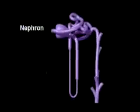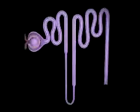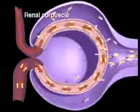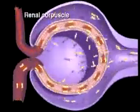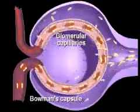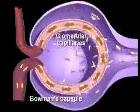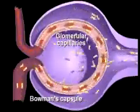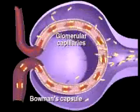In its first section, the renal corpuscle, filtration occurs as fluid and small molecules in blood are filtered from glomerular capillaries. The filtrate is captured within a chamber called Bowman's capsule.